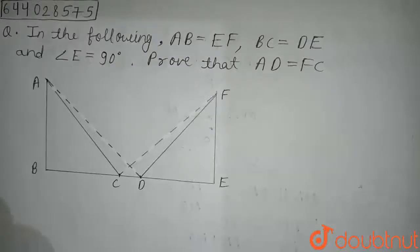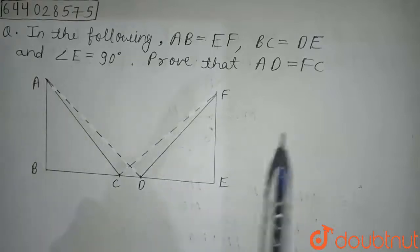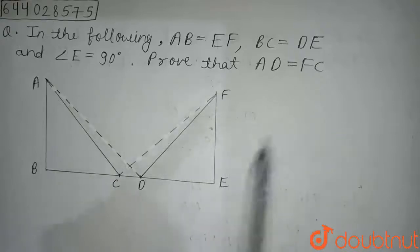Hello friends, my question is: in the following, AB equals EF, BC equals DE, and angle F equals 90 degrees. Prove that AD equals FC.